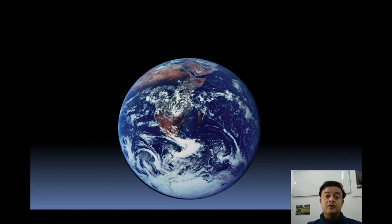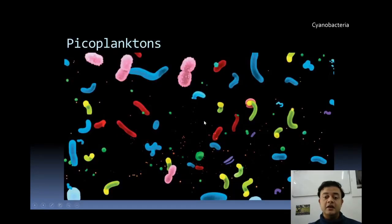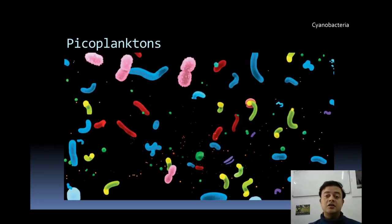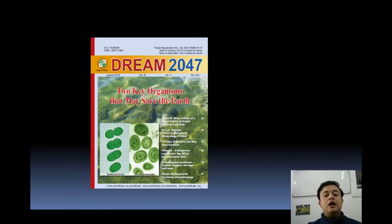This blue marble got its name from the oceans — almost 72% of planet Earth's surface is covered with oceans. If you zoom into any of the blue areas on Earth's surface, you will see extremely small plants called picoplanktons. These are actually cyanobacteria — prokaryotic organisms. Picoplanktons are everywhere, from the Arctic through the tropics to the Antarctic.